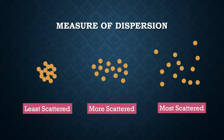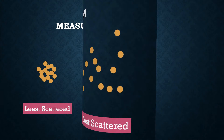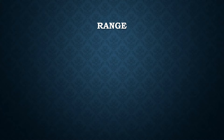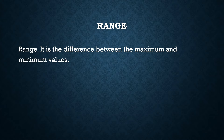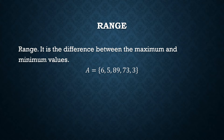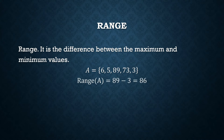The measure of dispersion is the measure of the degree of scattering of a set of data. The simplest measure of dispersion is the range — it is simply the difference between the maximum and minimum values of a data set. For example, given the set with elements 6, 5, 89, 73, and 3, the range is 89 (the maximum) minus 3 (the minimum).